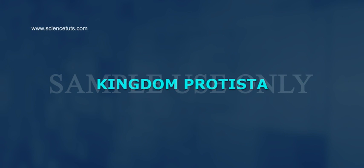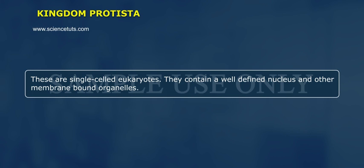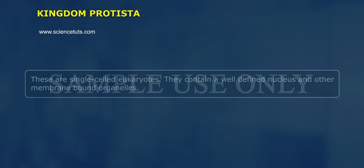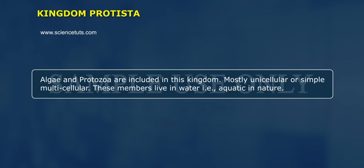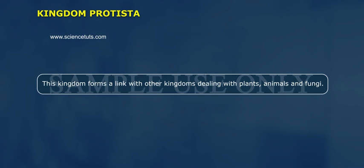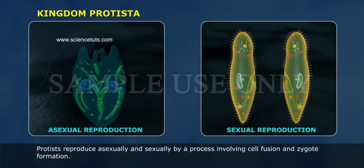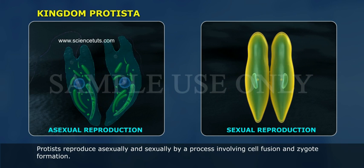Kingdom Protista: these are single-celled eukaryotes that contain a well-defined nucleus and other membrane-bound organelles. Algae and protozoa are included in this kingdom. Members are mostly unicellular or simple multicellular, live in aquatic environments, and this kingdom forms a link with other kingdoms dealing with plants, animals, and fungi.